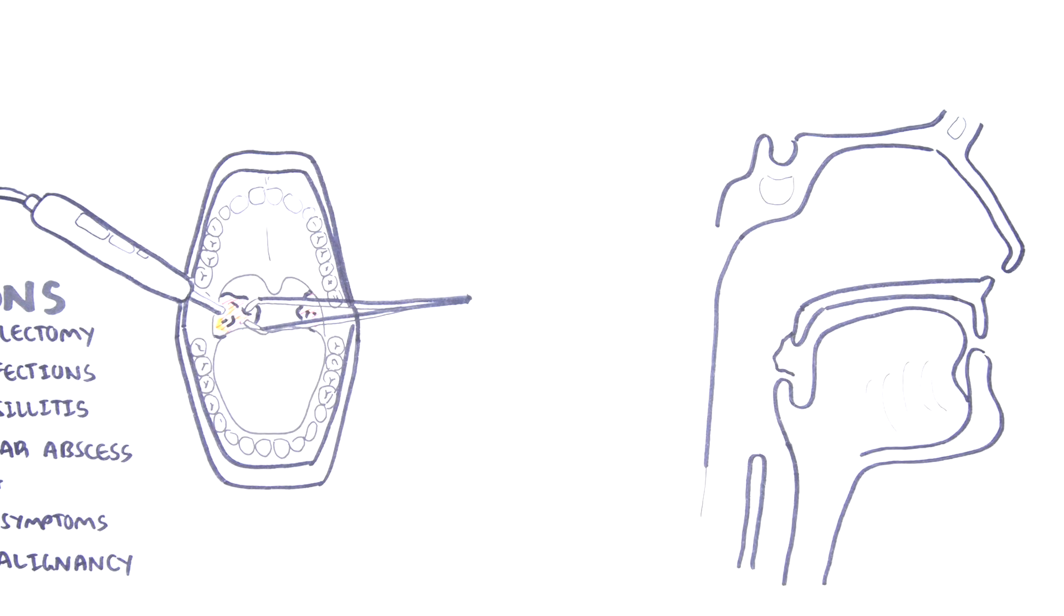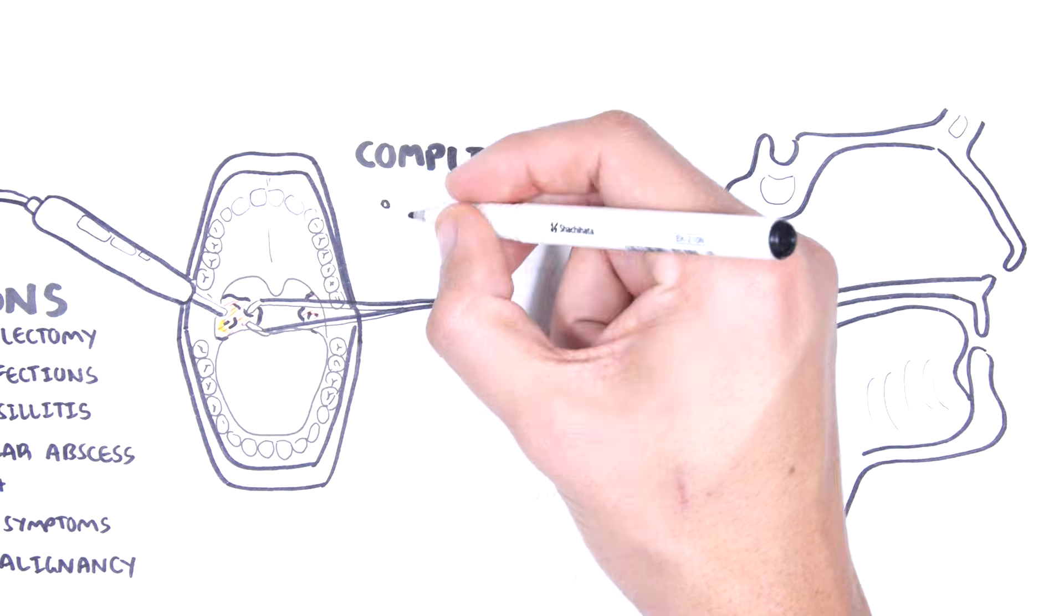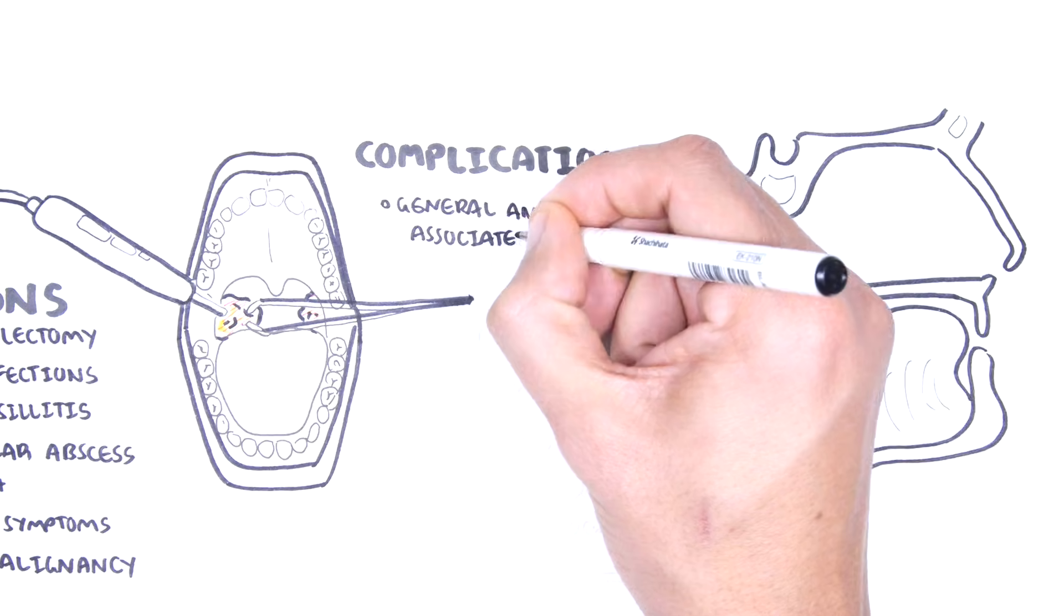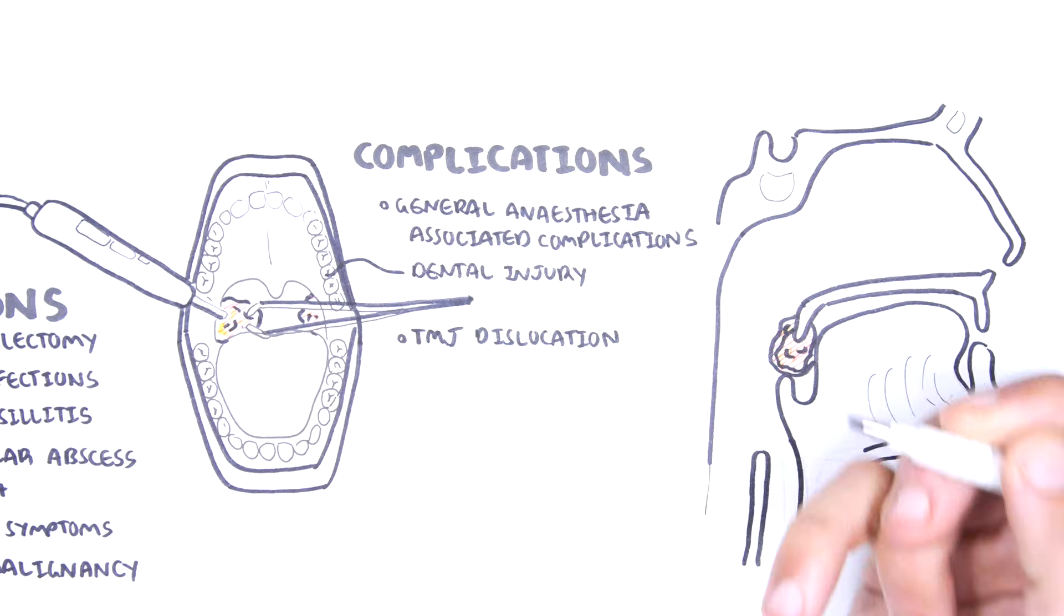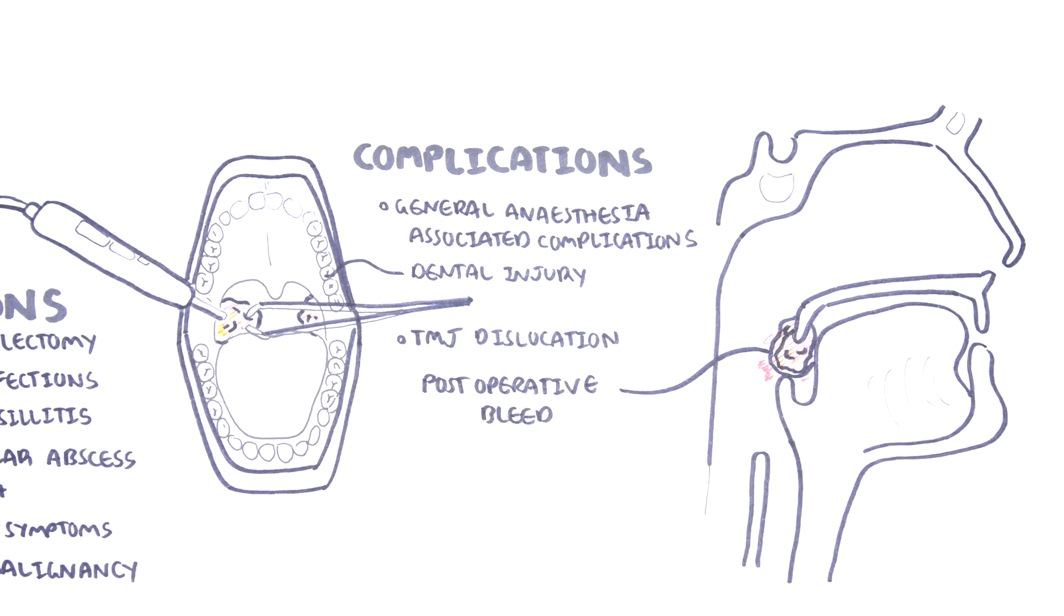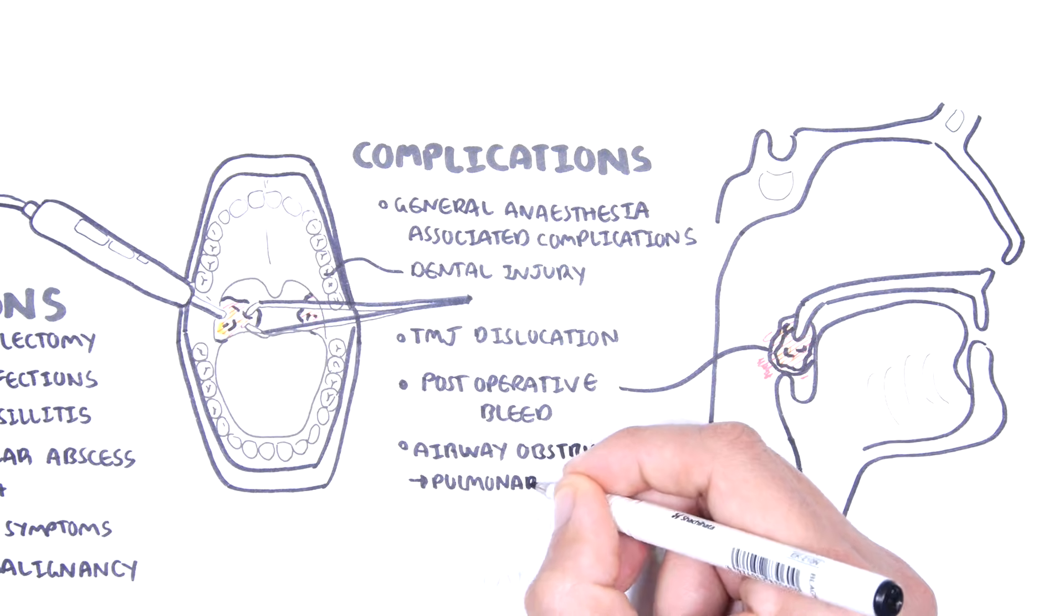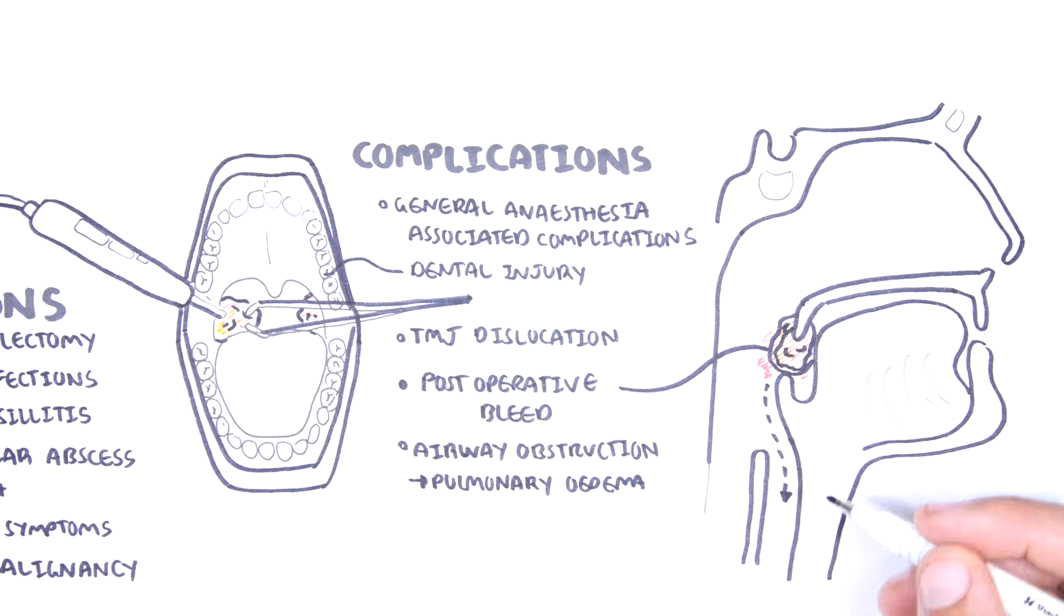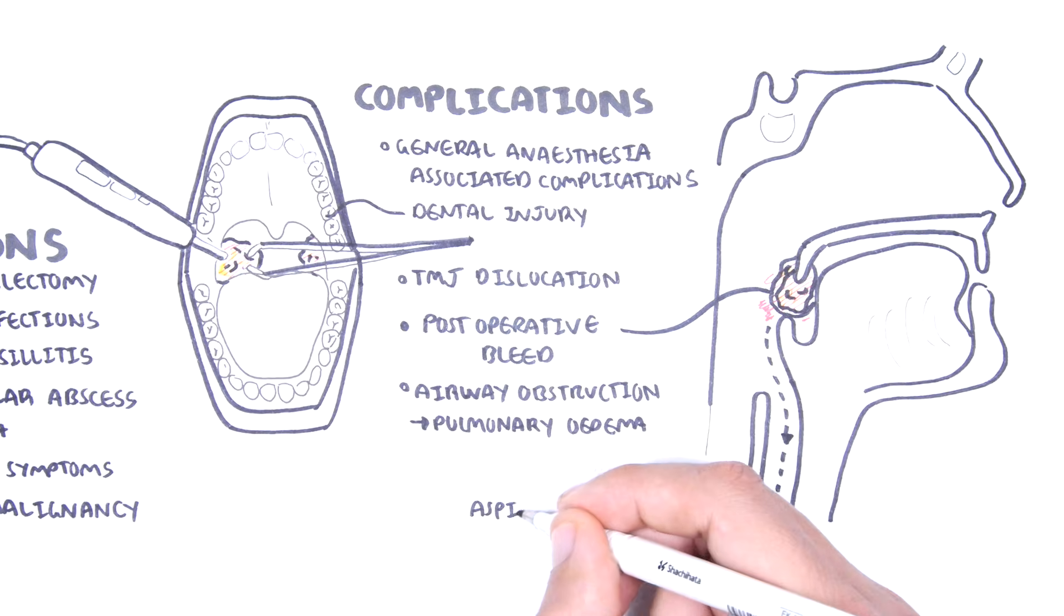Complications of tonsillectomy, which is very important, include general anesthesia-associated complications, dental injury, temporomandibular joint dislocation during the procedure, post-operative bleeding, because remember, there's a lot of blood supply to the tonsils, airway obstruction causing pulmonary edema, as well as aspiration of any contents during the surgery.